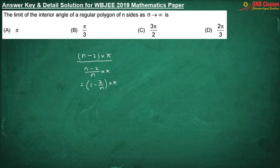As n approaches infinity, the limit of the interior angle becomes (1 − 0)π = π. Therefore, option A is correct. It is a very basic problem.